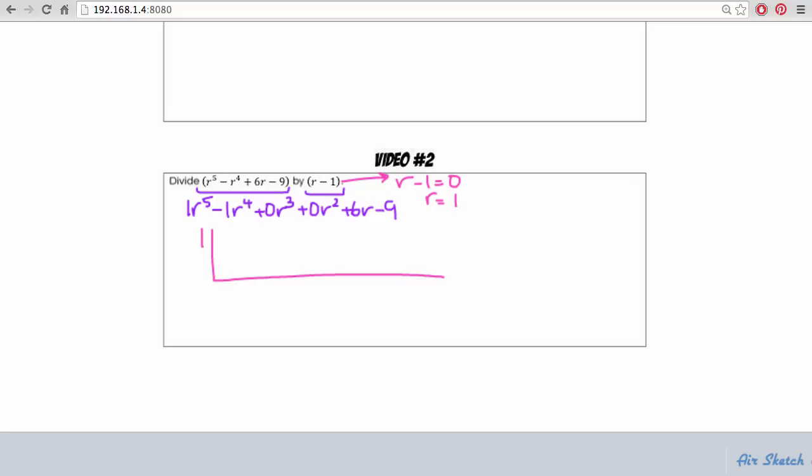Now it goes on the inside our coefficients for our polynomial. In this case we have 1, negative 1, 0, 0, 6, and negative 9.